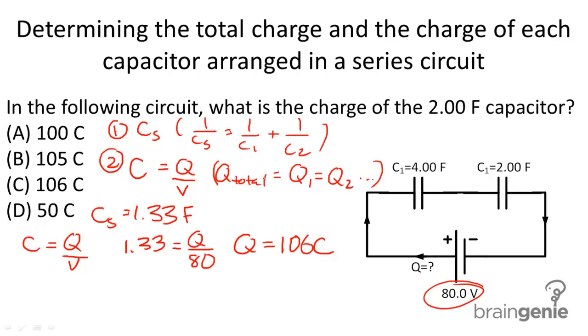And then since we know that Q total is equal to Q1 equal to Q2, that they're all the same for each capacitor, this is our final answer right here, answer choice C.